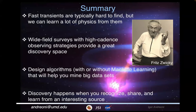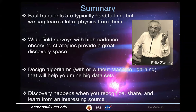To summarize: fast transients are typically hard to find, but they can hide quite interesting physics with a lot of applications. Wide-field surveys with high cadence and regular observing strategies can open new discovery spaces — they're up for grabs for you to explore with your favorite algorithm, borrowed or designed from scratch, with machine learning or without, as long as it works. Finally, discovery happens when you recognize what you find, share it, study it, and do the science. I think you can really do something great with everything you're learning, with your upcoming missions and projects.